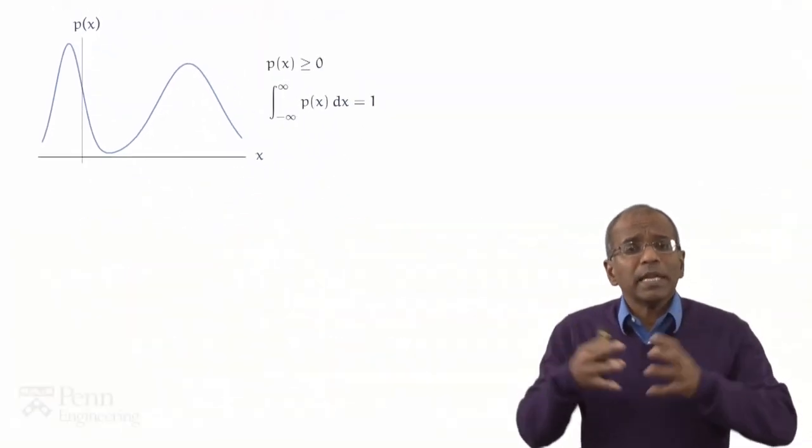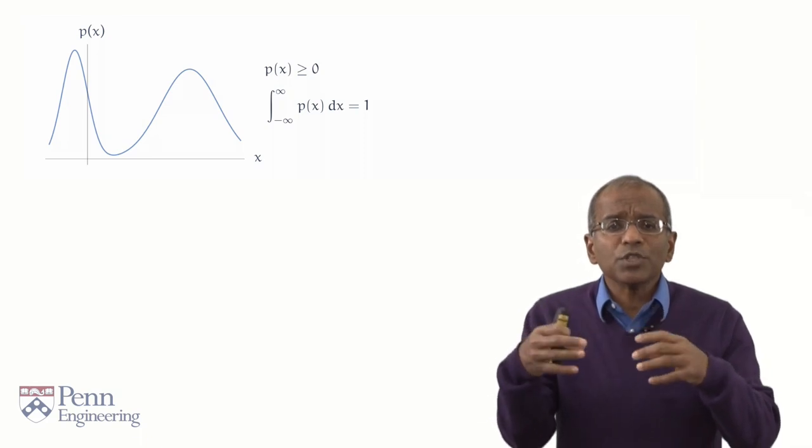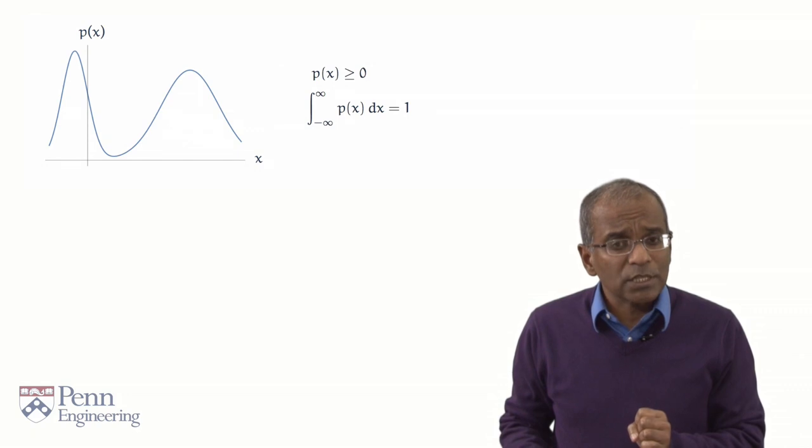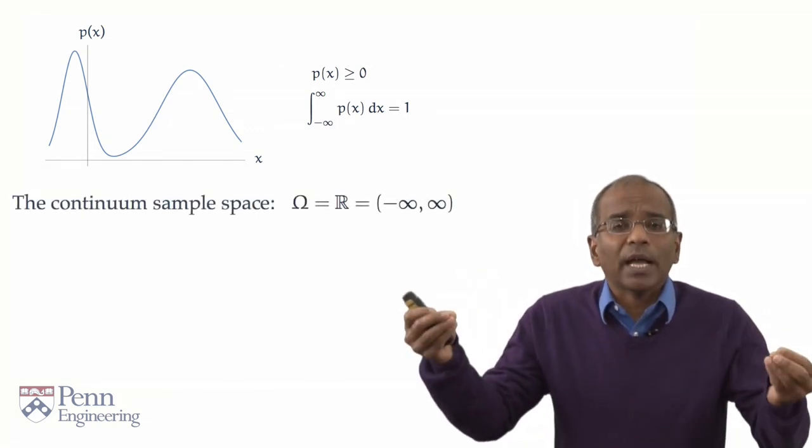Now, once you have a density, what kinds of chance experiment are we dealing with? Let's take stock. The underlying sample space is, in fact, a continuum. It is a real line.